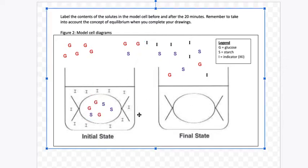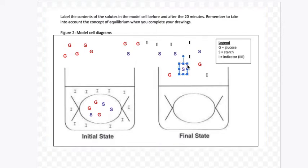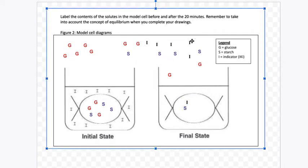So what happened over time? One thing that we noticed was that we had a color change inside of the cell. The inside of the cell went from clear to that blue-black color. The thing that produces that color is the reaction between iodine and starch. So we know there's still starch inside the cell, and we know that the iodine was able to go into the cell from outside of the cell.